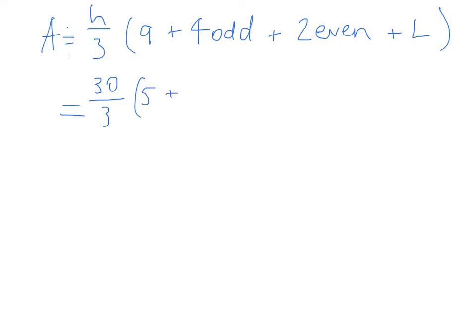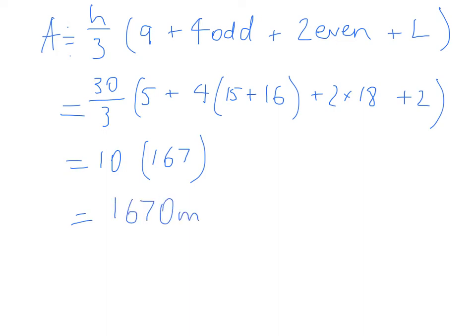Plus, now my odd ones are 15 and 16. I knock off the first and the last ones and that makes 15 and 16 the odd, plus 2 times 18 plus 2. That all ends up being 10 times 167, which is 1670 metres squared.